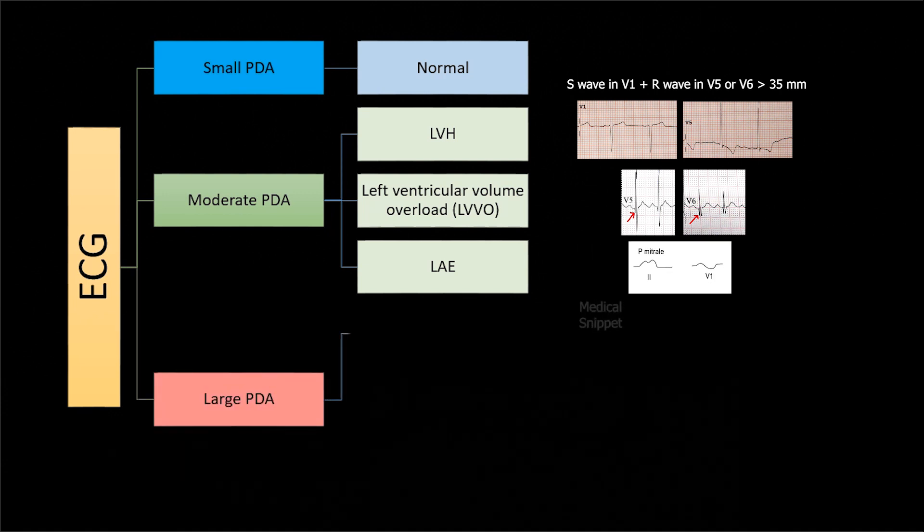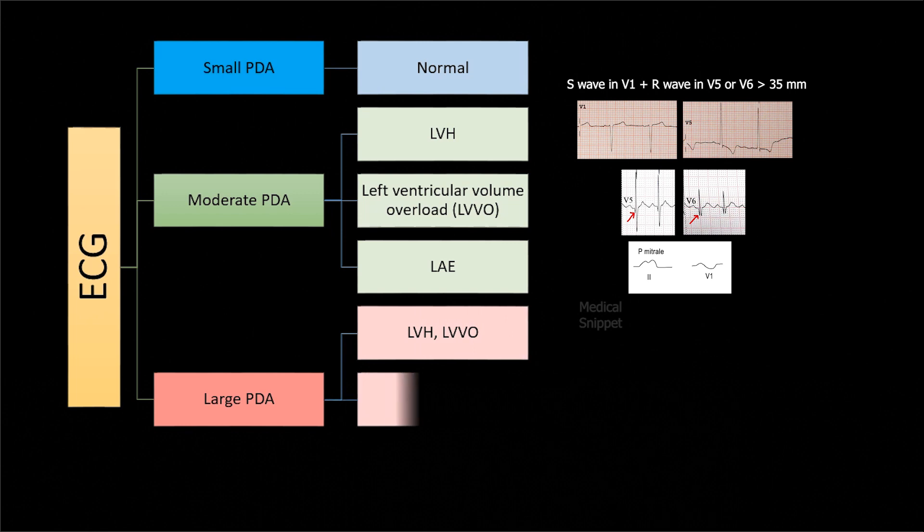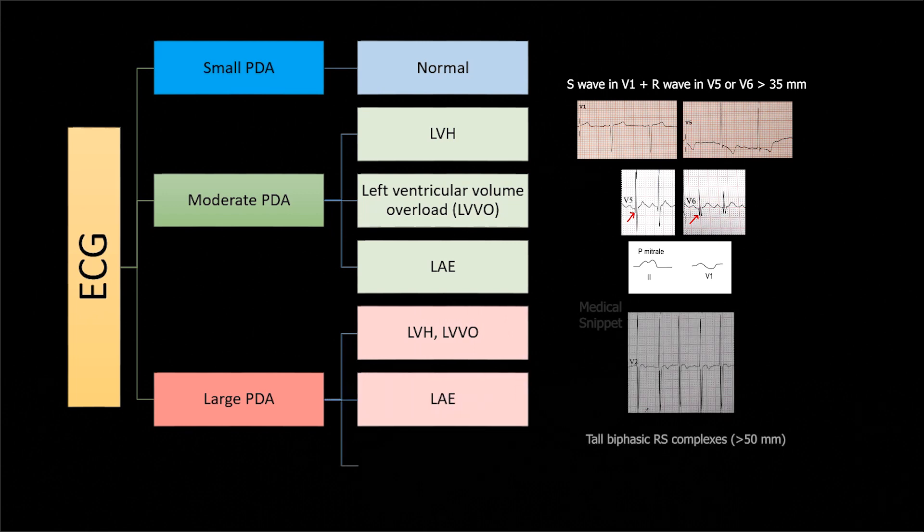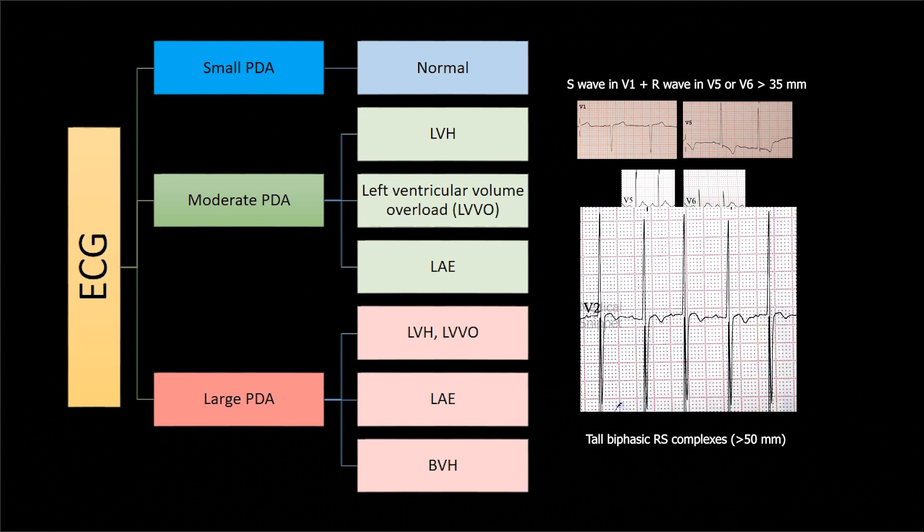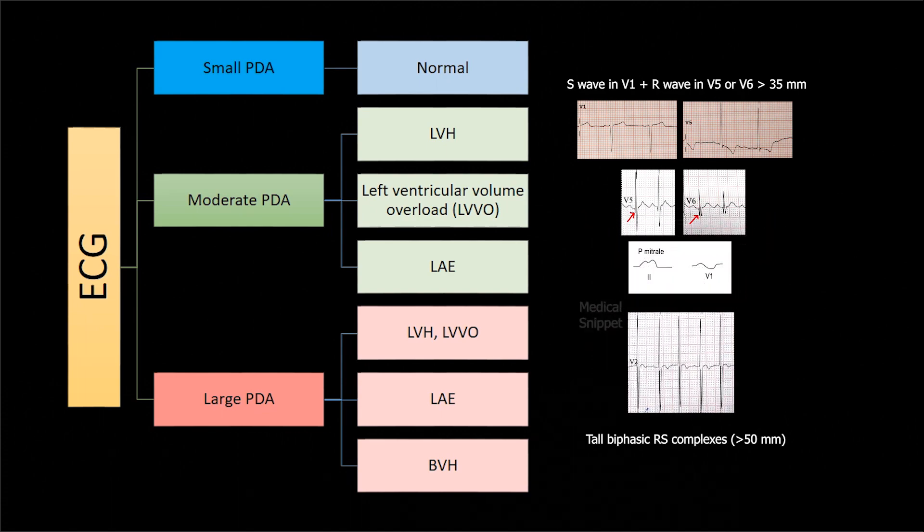In large PDA, in addition to the above findings, there is Katz-Wachtel phenomenon. That is tall biphasic RS complexes in the mid-precordial leads V2, V3, or V4, which denotes biventricular hypertrophy.